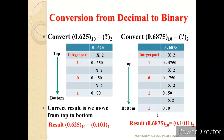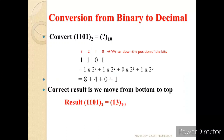Now let us do the reverse: conversion of binary to decimal. Convert 1101 base 2 to decimal. Write the positions of the digits: 0, 1, 2, 3. These positions are the powers of the base 2. So: 1×2³ + 1×2² + 0×2¹ + 1×2⁰ = 8 + 4 + 0 + 1 = 13. So 1101 base 2 equals 13 in decimal.